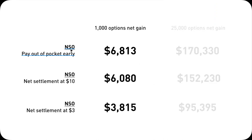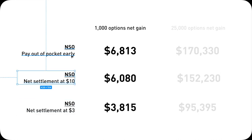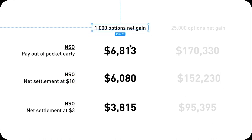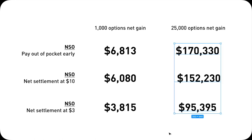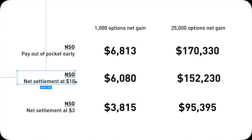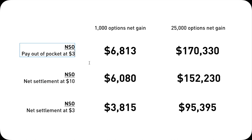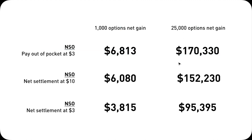Putting all three scenarios together: you can exercise early with net settlement at fair market value $3, exercise late with net settlement at $10, or pay out of pocket early. When you exercise 1,000 options, the net gain can be quite different. If you scale up to 25,000 options, the gain can be more substantial. Looking at this table, paying upfront actually makes you more money and more profit — the drawback is, of course, you have to come up with the money upfront. That all makes sense and should be pretty straightforward.